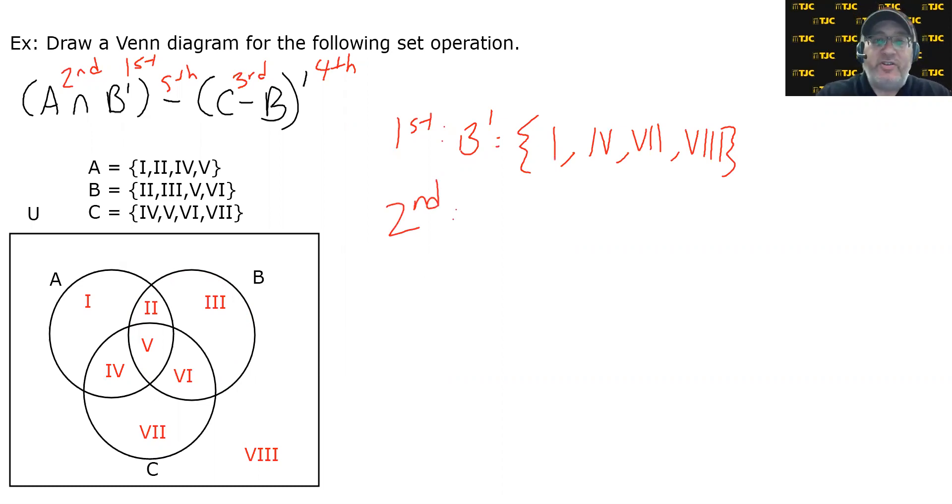Second, our second operation is the intersection inside the first parentheses, intersect B complement. So let's highlight the two sets that we want to take the intersection of. A is here, B complement is here, and we want their intersection. Their intersection is what they have in common. What do these have in common? They have a 1 in common. They have a 4 in common. And that's it. 1 and 4.